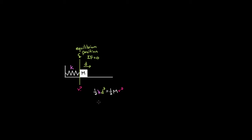All the spring energy has turned into kinetic energy. Solving for v, we get that the speed of the mass at the equilibrium position is the square root of k over m times d squared. You can pull the d out since it's d squared under a square root. This is the speed of the mass passing through the equilibrium position.